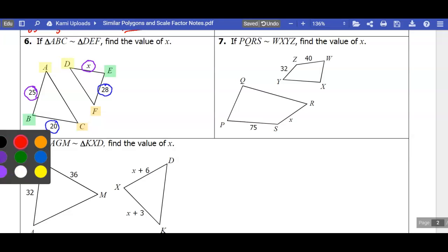So now that I have everything color coded, I can make a ratio of the sides. So let's start with the sides that have measurements. So 20 over 28. So I'm going left triangle, right triangle. So we're going to make sure we do all our ratios that way. So 20 over 28.